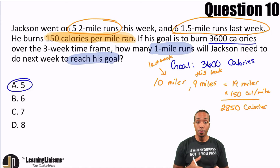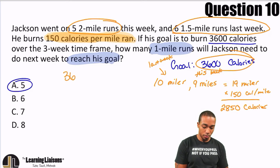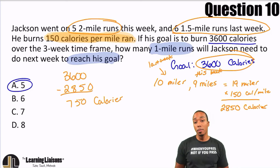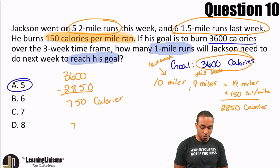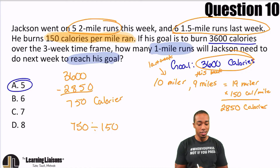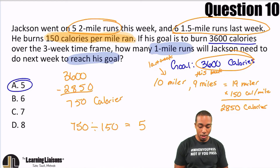We're going to subtract that from the 3,600: 3,600 minus 2,850 gives us 750 calories left. If every mile is 150 calories, we divide 750 by 150 — because if we have 750 total calories left and every mile represents 150 calories, we divide to see how many miles that is. 750 divided by 150 is five miles.